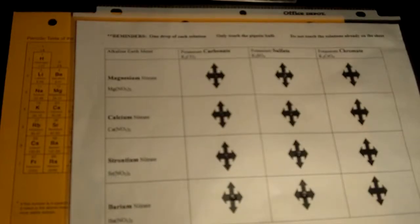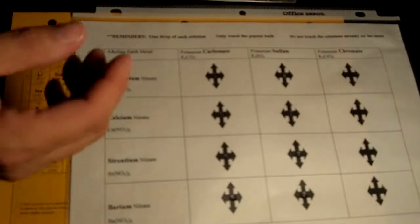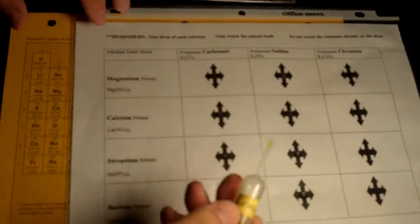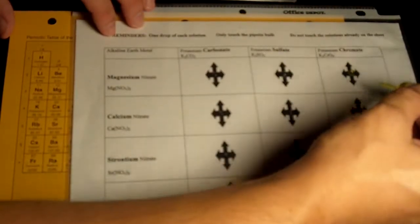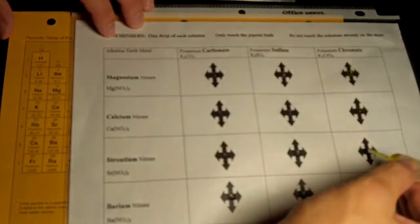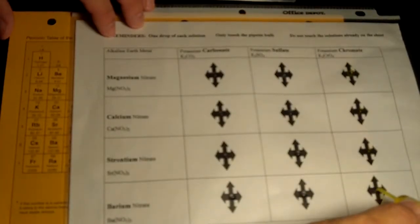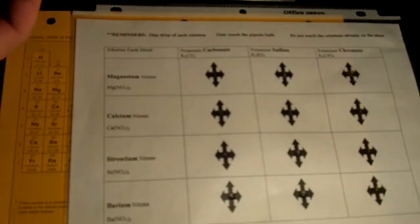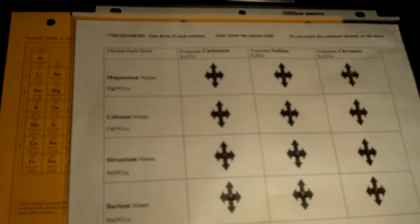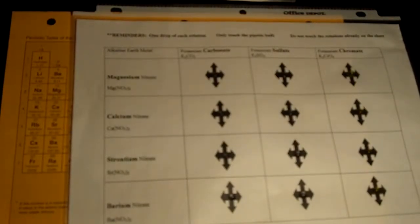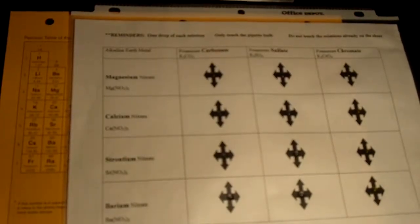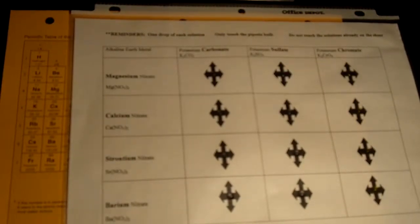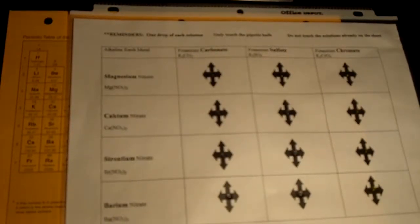And the last one, which is the yellow compound, this is the potassium chromate. One drop, again, on each of the surfaces, or each of the targets. Okay, now we're going to cross-react it with the alkaline earth metal. And again, what you're looking for is the presence of a precipitate. So, if you see a precipitate, then you're going to mark on your data table PPT. And remember, if there is no precipitate, you must leave the square blank. Don't write no reaction, don't put N/A or anything like that, just leave it blank.